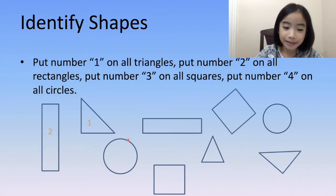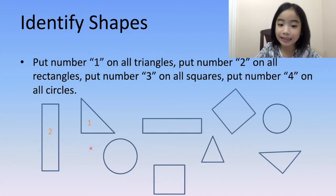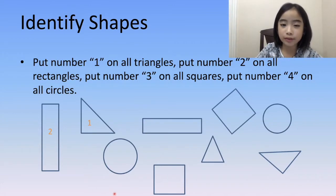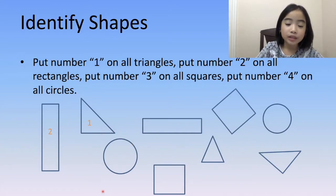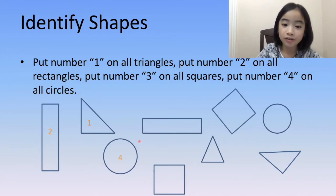And now, let's look at this shape over here. It doesn't have any sides or corners, so it's a circle. Let's put the number four on this circle.